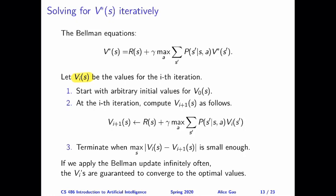So first of all, we will start with some arbitrary initial values for v sub 0 of s. We'll call the first iteration the 0th iteration. Arbitrary initial values can be anything. Zero is a pretty good choice.